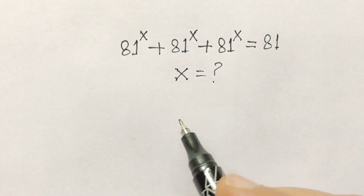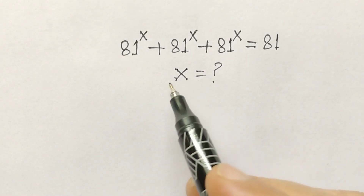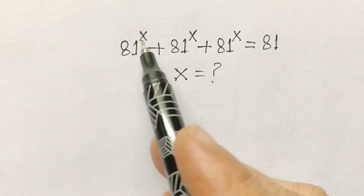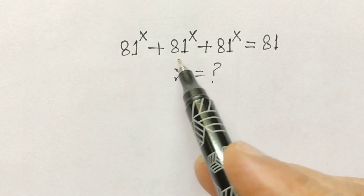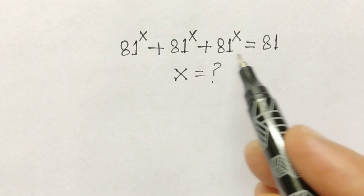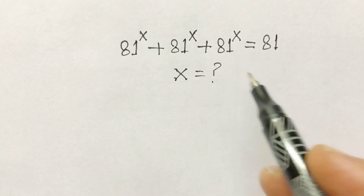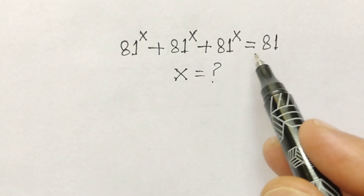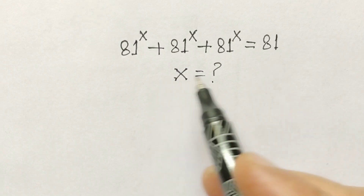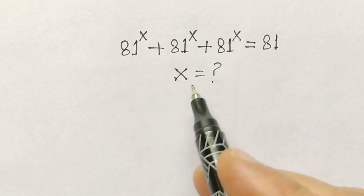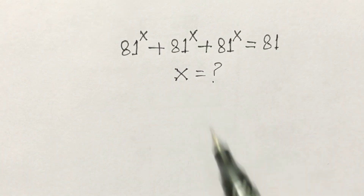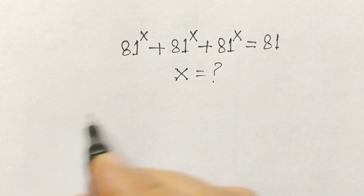Hi friends, today we have a nice equation: 81 to the power x plus 81 to the power x plus 81 to the power x is equal to 81. We have to find the value of x. So let's start.